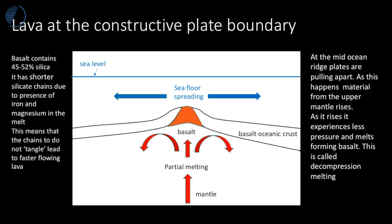These minerals which form silicate chains have very short chains — there's not much polymerization. This means that the melt which is erupted onto the sea floor is of low viscosity, and low viscosity means that the gases escape easily and they form non-explosive eruptions.